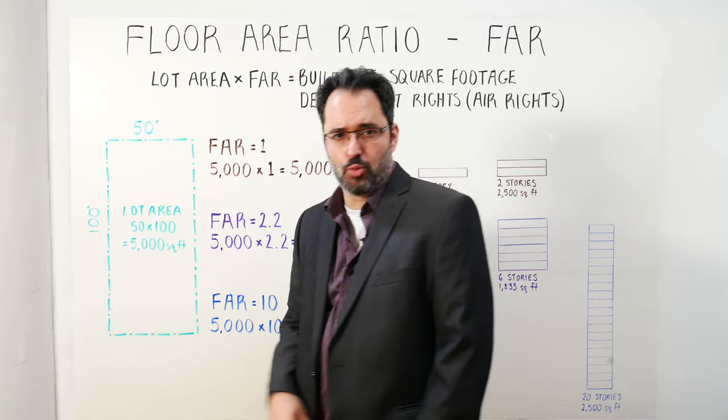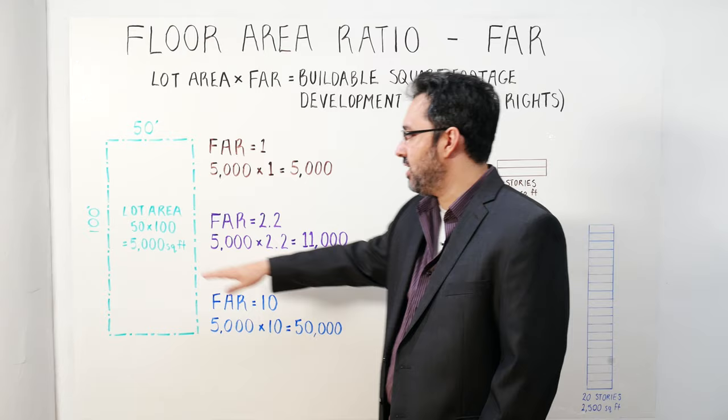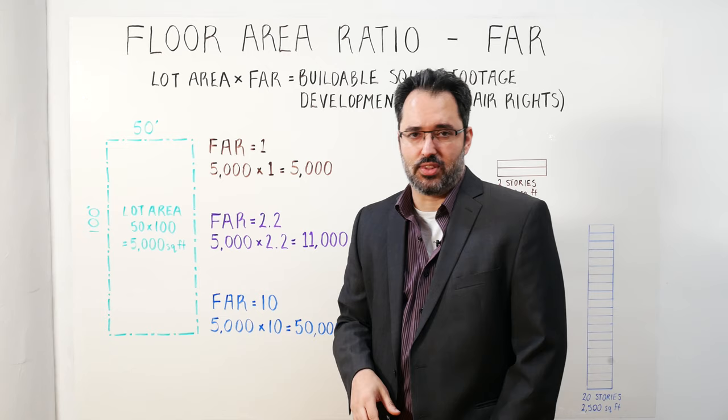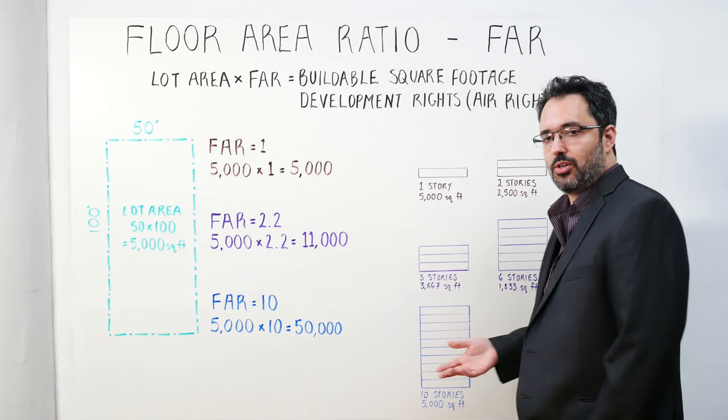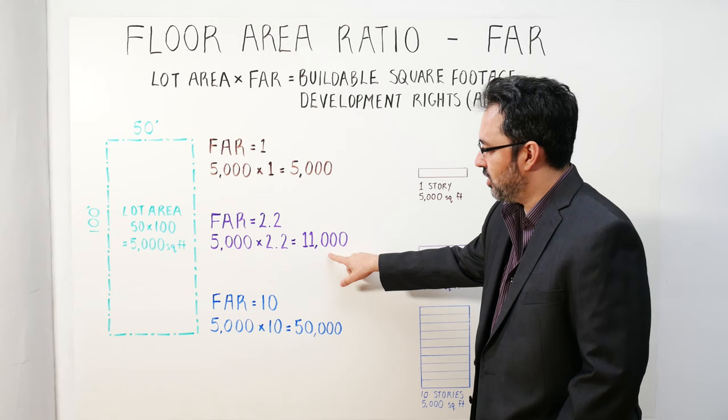If you have an FAR of 2.2 — if you're in an R6 zone in New York City — it's 5,000 square feet, the lot area, multiplied by 2.2, the FAR, and that gives us 11,000 square feet. You could do a three-story building at 3,667 square feet per floor, or a six-story building at 1,833 square feet per floor, but either way the whole building adds up to 11,000 square feet. That's the zoning square footage.